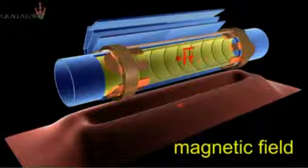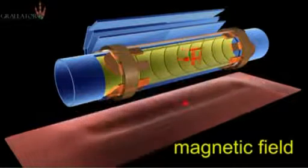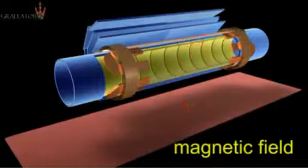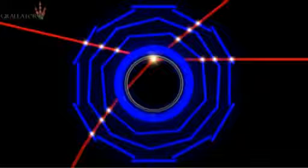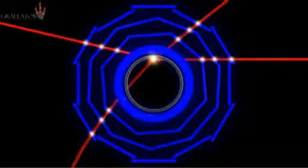To detect the antihydrogen, we turn off the magnetic fields and the antihydrogen escapes. The antihydrogen then annihilates on the matter in the wall of the system.